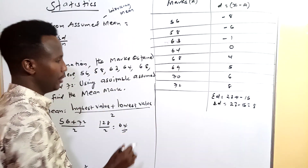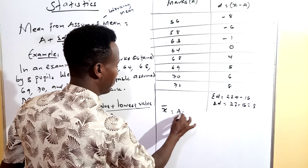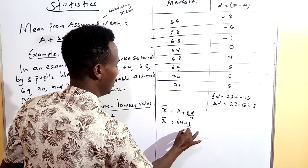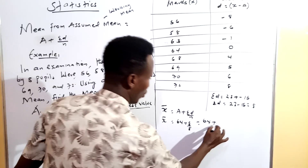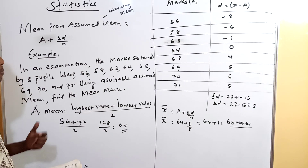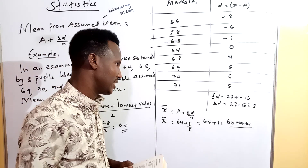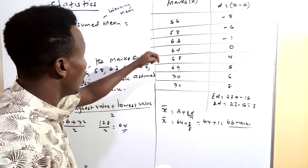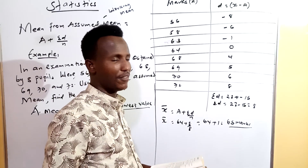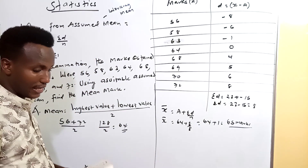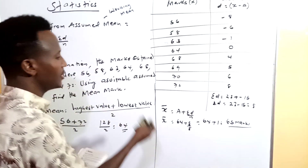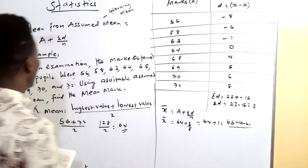The formula for mean from assumed mean is: x̄ = A + (sum of D) / N. So x̄ = 64 + 8/8 = 64 + 1 = 65 marks. This is how we calculate the mean from assumed mean given ungrouped data without frequency, using a two-column table of X and D. Such a question typically carries 3 or 4 marks in an exam.